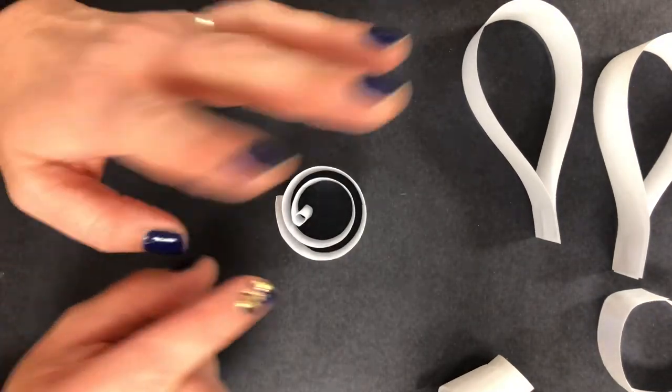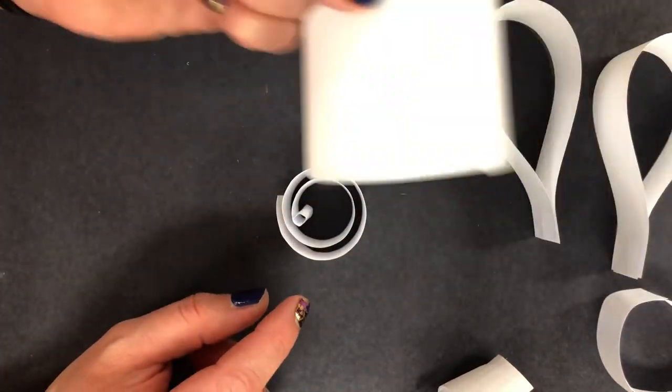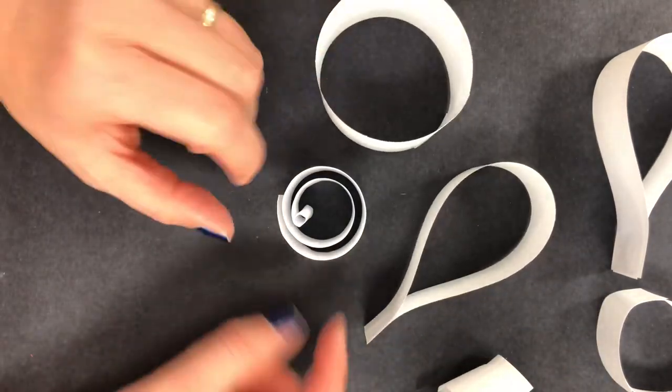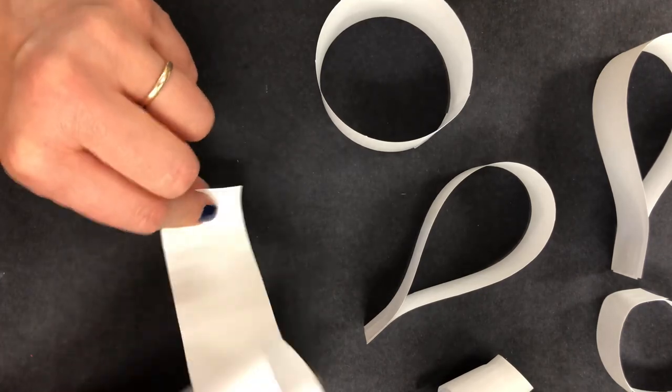So artists, today we've learned how to make rolls, we've learned how to make loops in the other YouTube videos before this one, and we've learned how to make a curl out of paper.